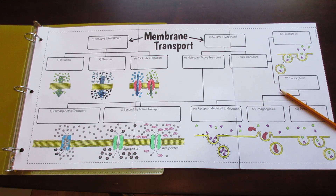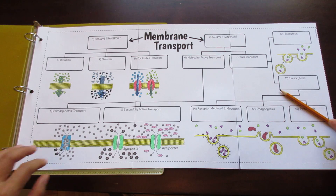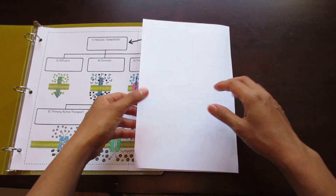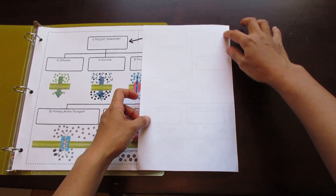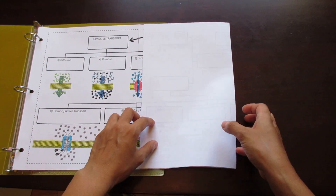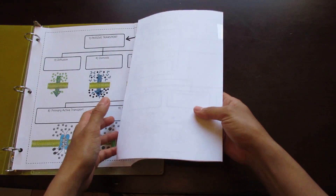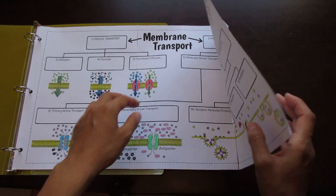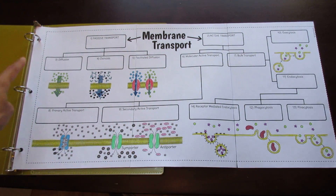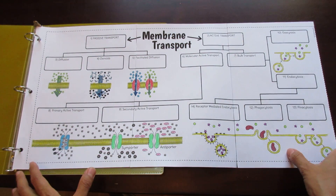This is the Tang Star Science Big Membrane Transport Foldable. It's composed of three pieces of paper that, when cut along the seams and taped, will fold nicely into a binder without impeding the binder rings. For use in an interactive notebook, cut along the dashed edges to make it a smaller foldable.